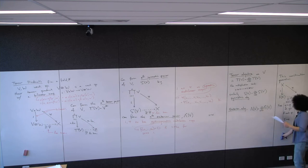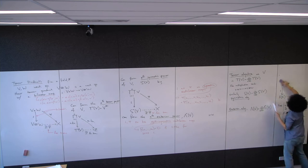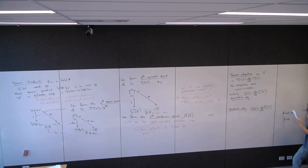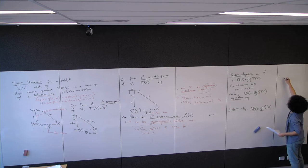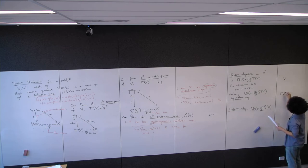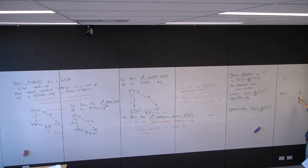The last thing I want to say is that there are universal properties for these. We have our vector space V, we have T(V) — the tensor algebra on V — and some other algebra A, which is a vector space over our ground field with a multiplication.